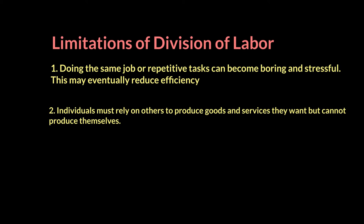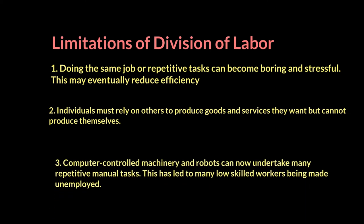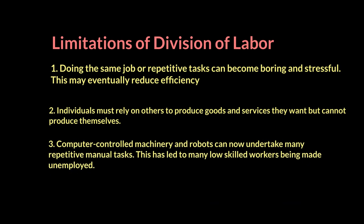A third issue is that division of labor simplifies tasks into very small subtasks, which means computer-controlled machinery and robots can now replace people easily. Those machines have taken over these repetitive manual jobs, leading many low-skilled workers to become unemployed because they are no longer needed for the smaller subtasks that division of labor created.